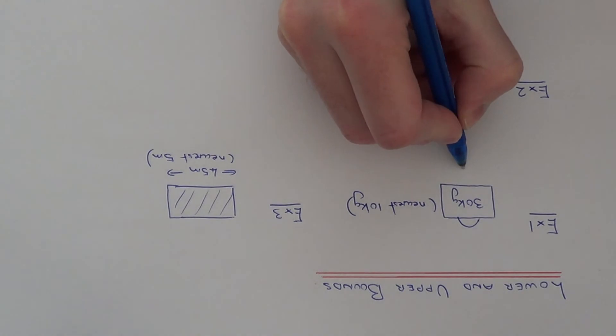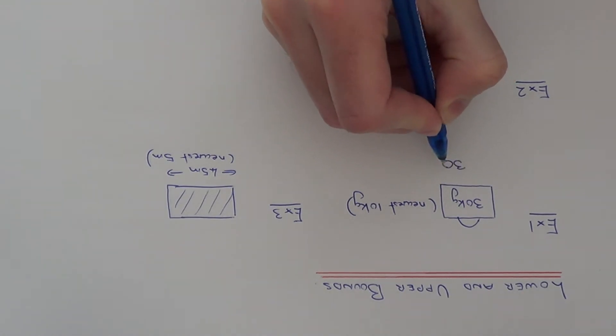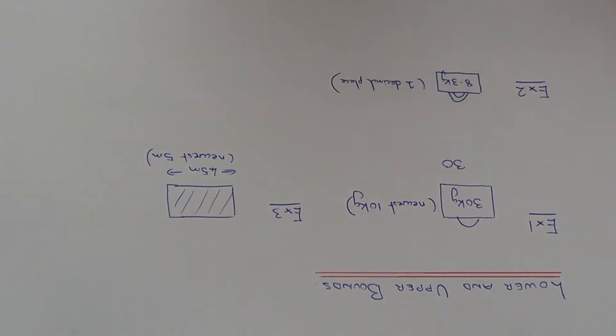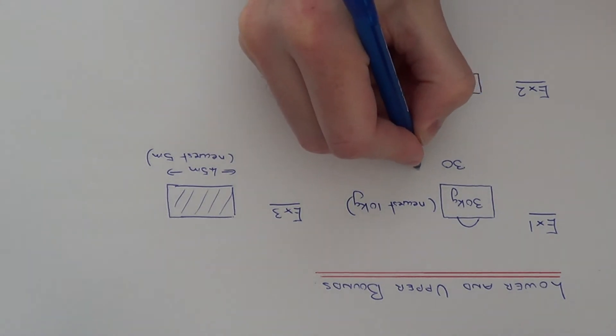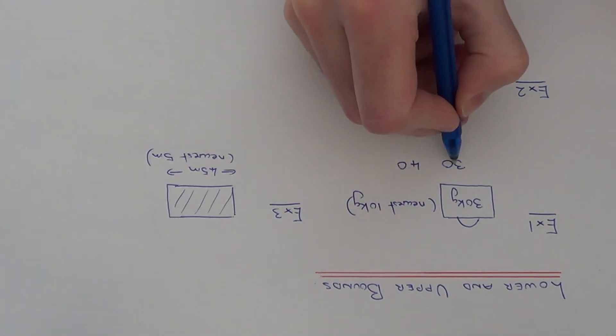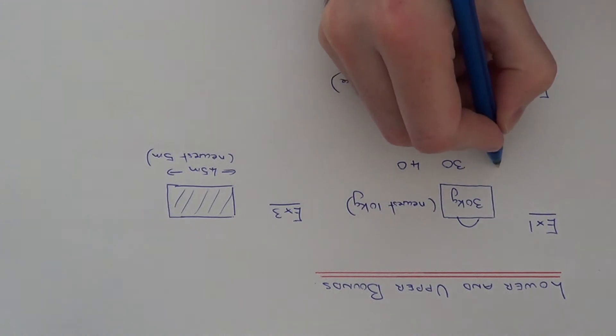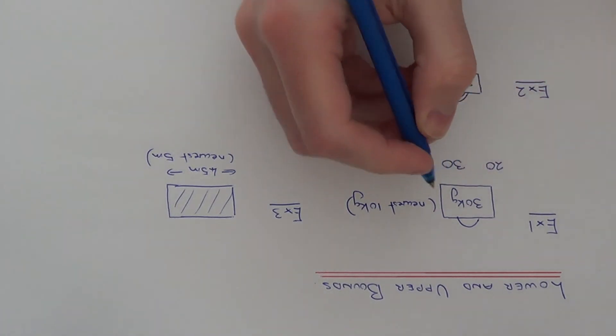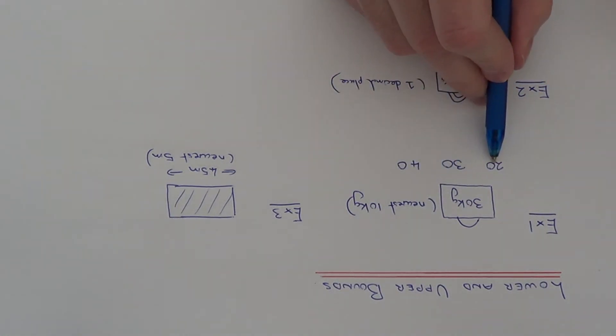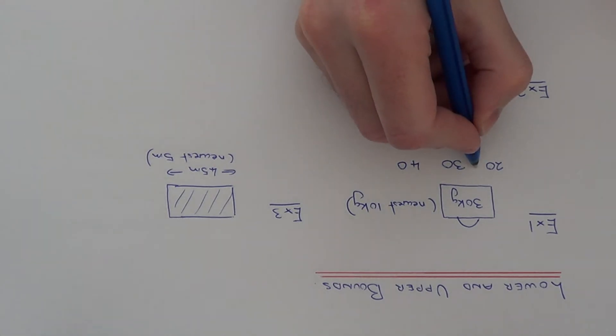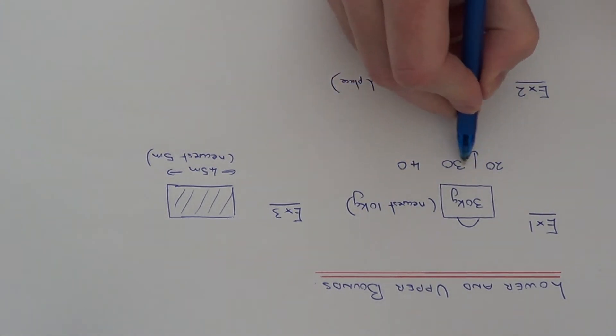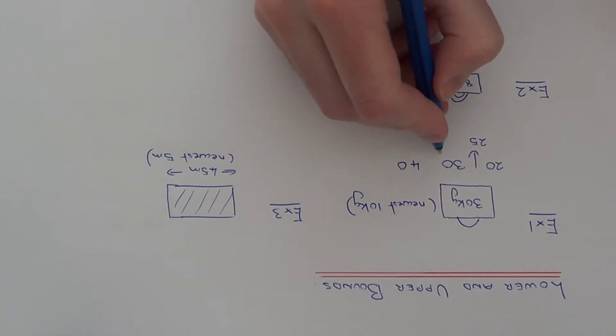So all we need to do is first of all write down 30. The value above 30 on the scale is 40 and the value below 30 on the scale is 20. Once you've wrote these two values down, all we need to do is go halfway between 20 and 30 which is 25 and halfway between 30 and 40 which is 35.